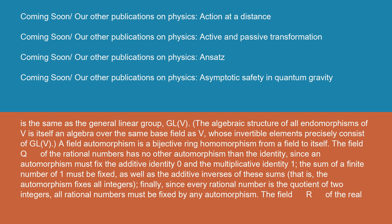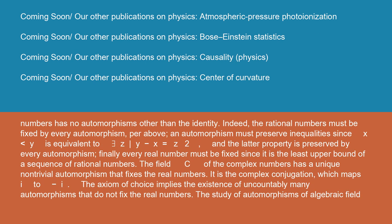The field R of the real numbers has no automorphisms other than the identity. Indeed, the rational numbers must be fixed by every automorphism. An automorphism must preserve inequalities, since x < y is equivalent to there exists c: y - x = z², and the latter property is preserved by every automorphism. Finally, every real number must be fixed since it is the least upper bound of a sequence of rational numbers.